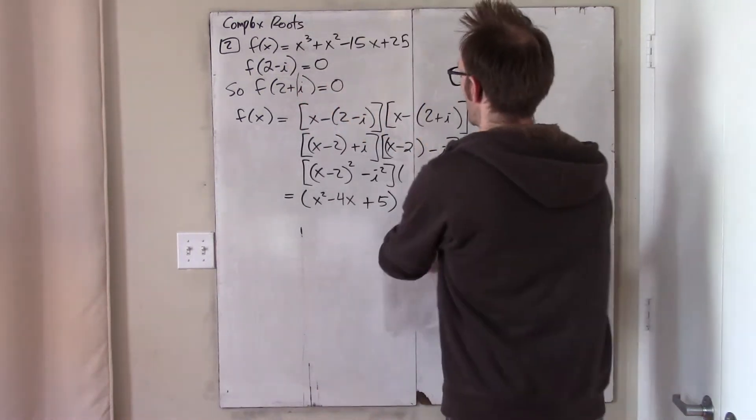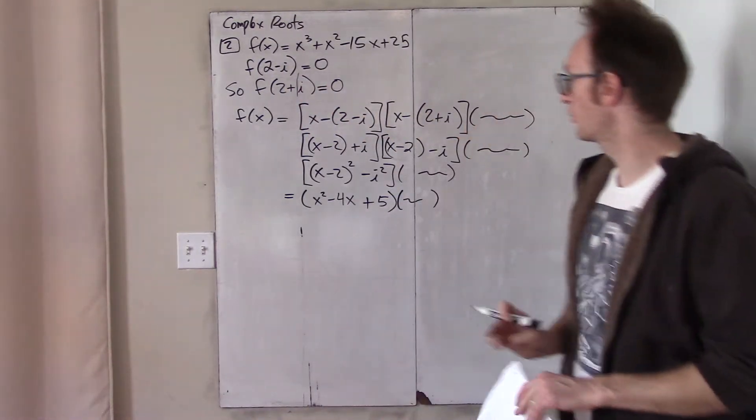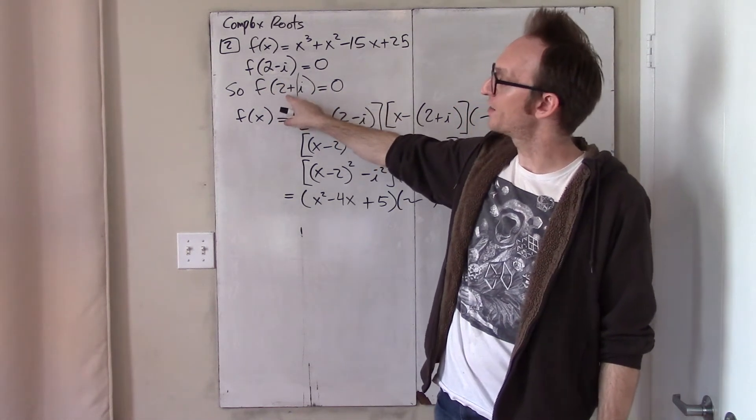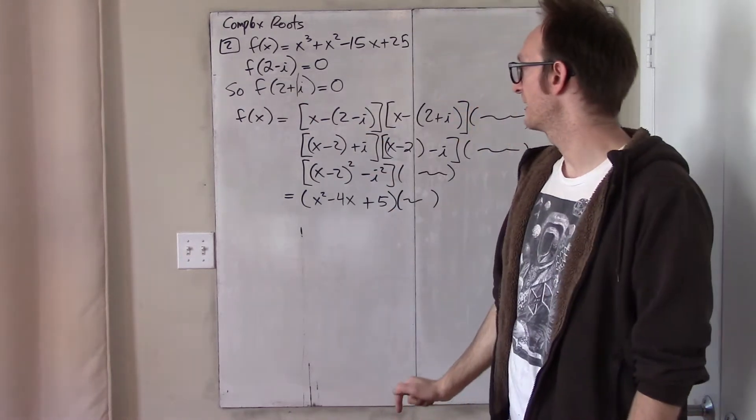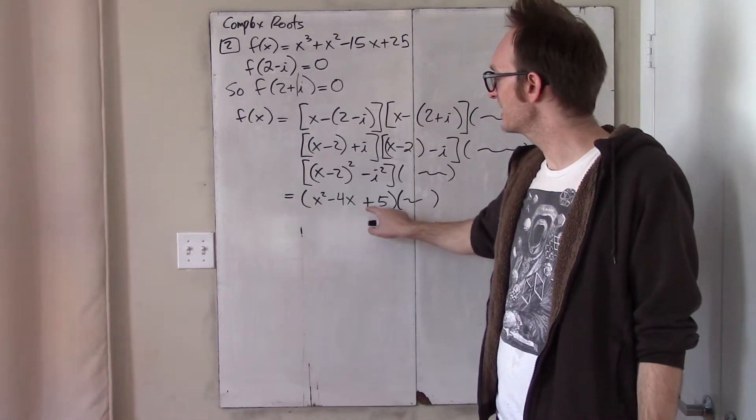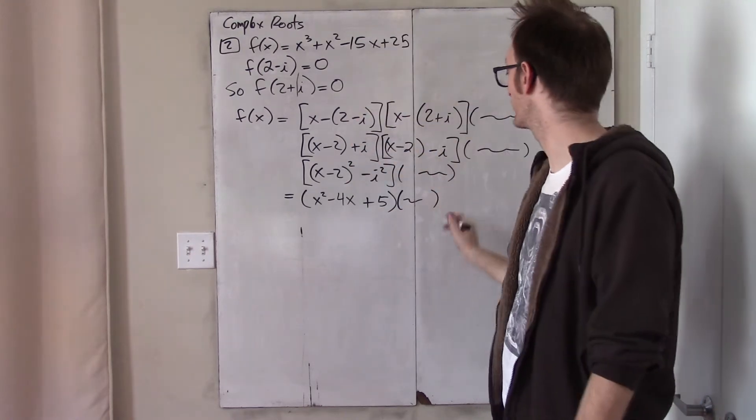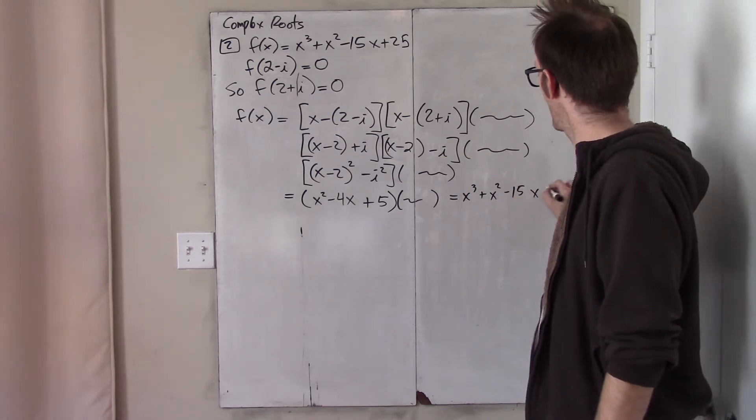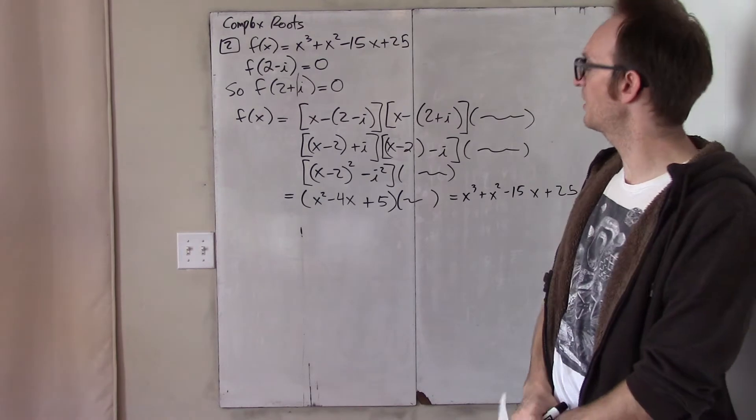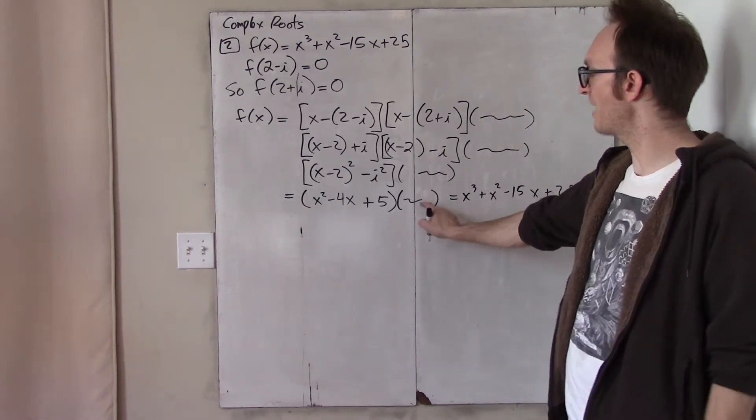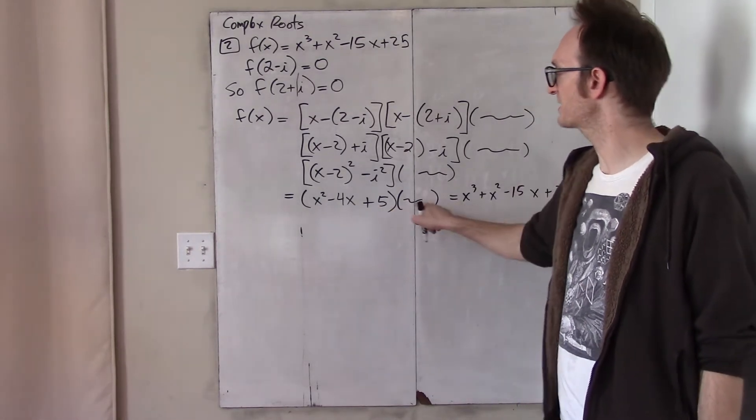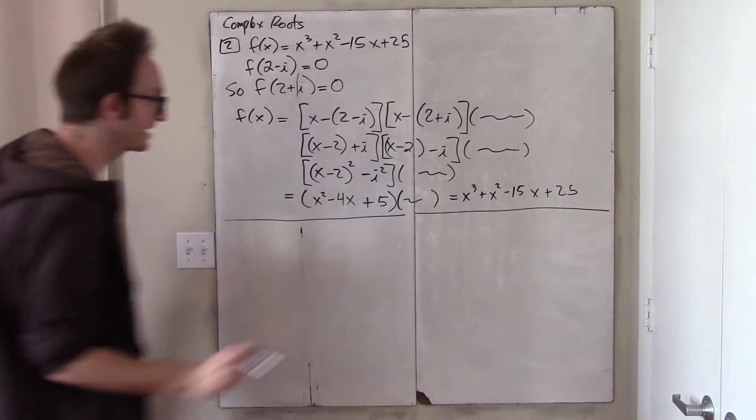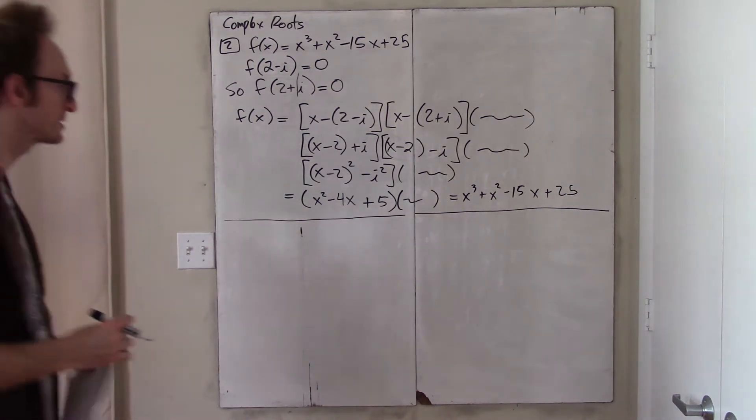So what I have just shown is that knowledge that 2 minus i and 2 plus i are roots of this function, that x squared minus 4x plus 5 is a factor of this polynomial. And then, of course, the polynomial itself is given to us at the outset. And so, the only thing left to do is to find out what this is. So, if this quadratic times something equals this cubic, and I want to know what that something is, then I think it's obvious that we can just do polynomial long division.